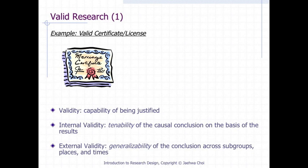Validity can be divided into two different types, internal and external validity. Let's talk about the external validity first. It can be defined as a generalizability of the conclusion across subgroups, places, and times. Internal validity can be defined as tenability of the causal conclusion on the basis of the results.